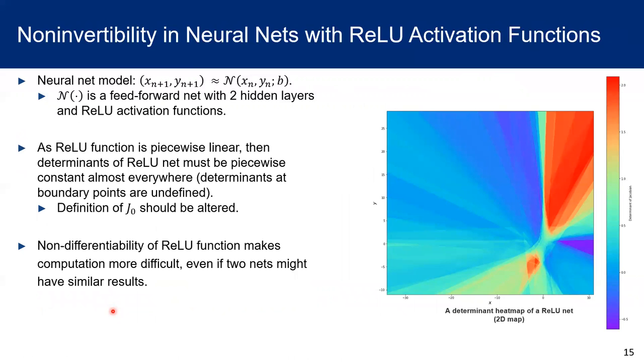We also think about what is going to happen if we keep the architecture of this neural network, but only change the activation function from sigmoid to ReLU. From the picture, we could see as the ReLU function is piecewise linear, the determinants of the Jacobian matrices for this map should be piecewise constant, except undefined determinants at those boundary points. The nature of ReLU net also suggests we have to modify the definition of j0 set. Moreover, due to non-differentiability of ReLU function, it will cause us more computational resources and will become more difficult, although we might have similar results compared with the sigmoid net.